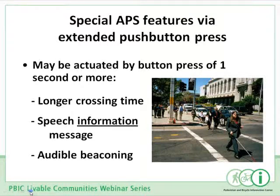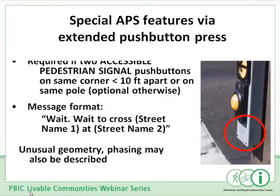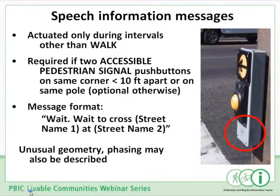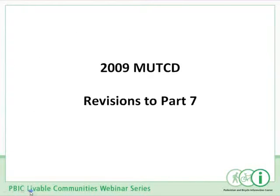The extended push button press is a new way in the MUTCD to call special APS features. You can use it to call for longer crossing time, a speech information message — which can provide information about the geometry of the intersection — or audible beaconing. The information message is only used during intervals other than the walk, and the message format is: 'Wait — wait to cross Broadway at Howard.' Unusual geometry and phasing can also be described. That finishes the markings and signals part — I'll turn it back to Bruce for the other parts of the MUTCD.